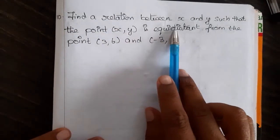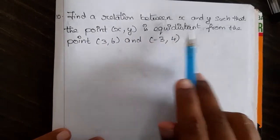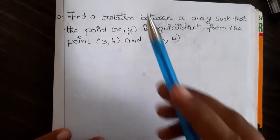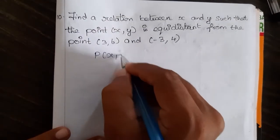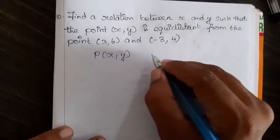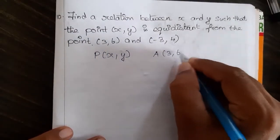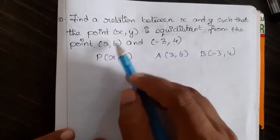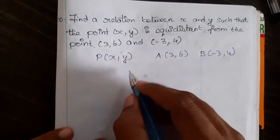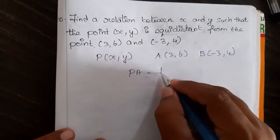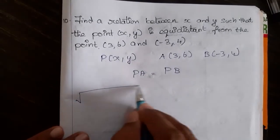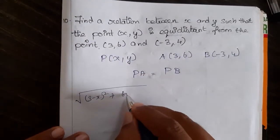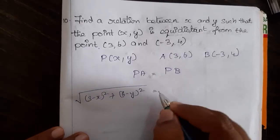Here we go for the next problem: find the relationship between x and y such that the point (x, y) is equidistant from (3, 6) and (-3, 4). Let P be (x, y), A be (3, 6), and B be (-3, 4). Since equidistant, PA = PB: square root of (3-x)² + (6-y)² equals square root of (-3-x)² + (4-y)².